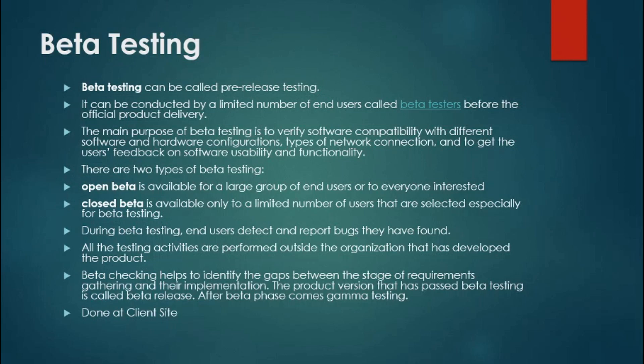During beta testing, end users can also detect and report bugs. Since exhaustive testing — covering all permutations and combinations of scenarios — is not possible, the QA team may miss some defects. Beta testing allows end users to detect such defects before the product is released, so they can be fixed before deploying to the production environment.